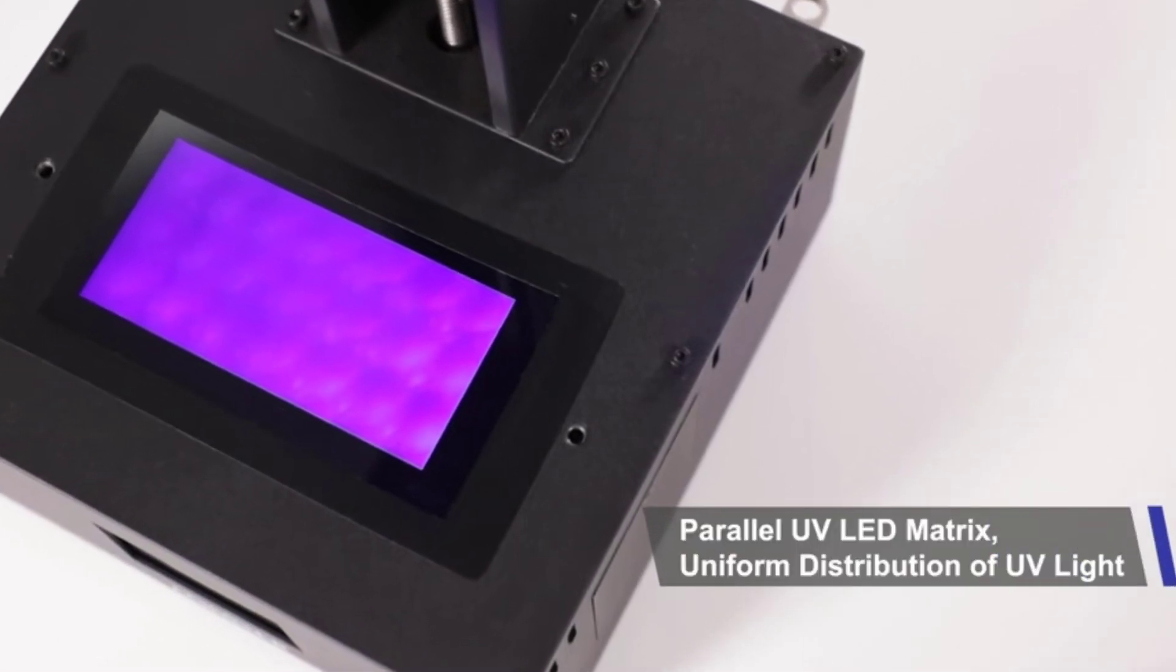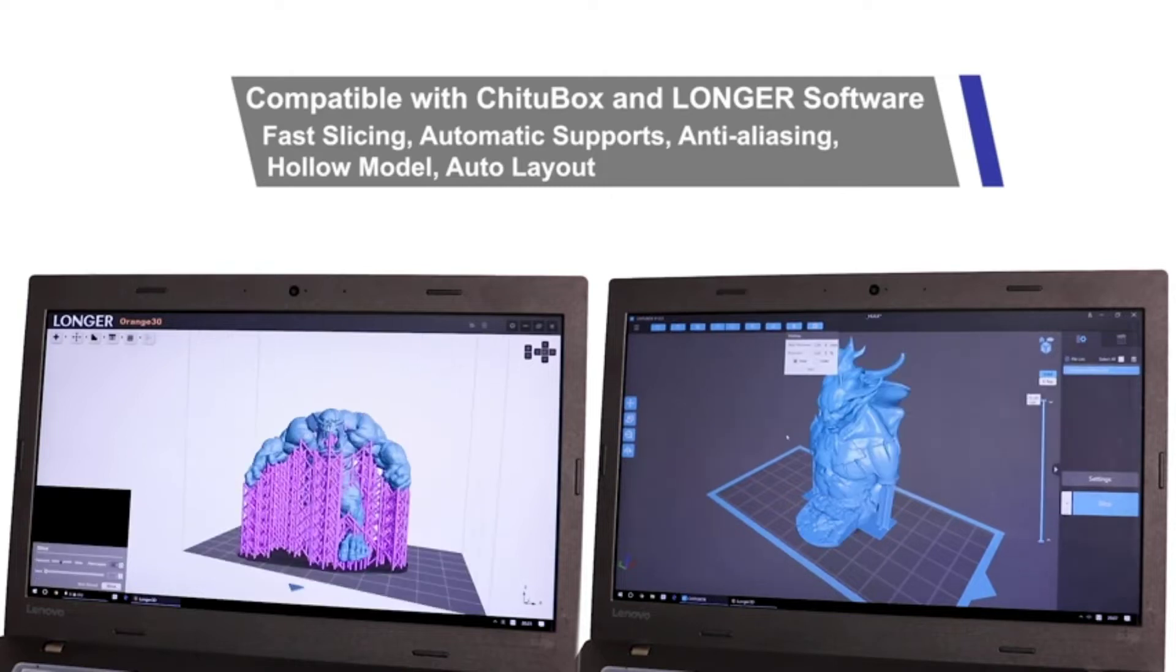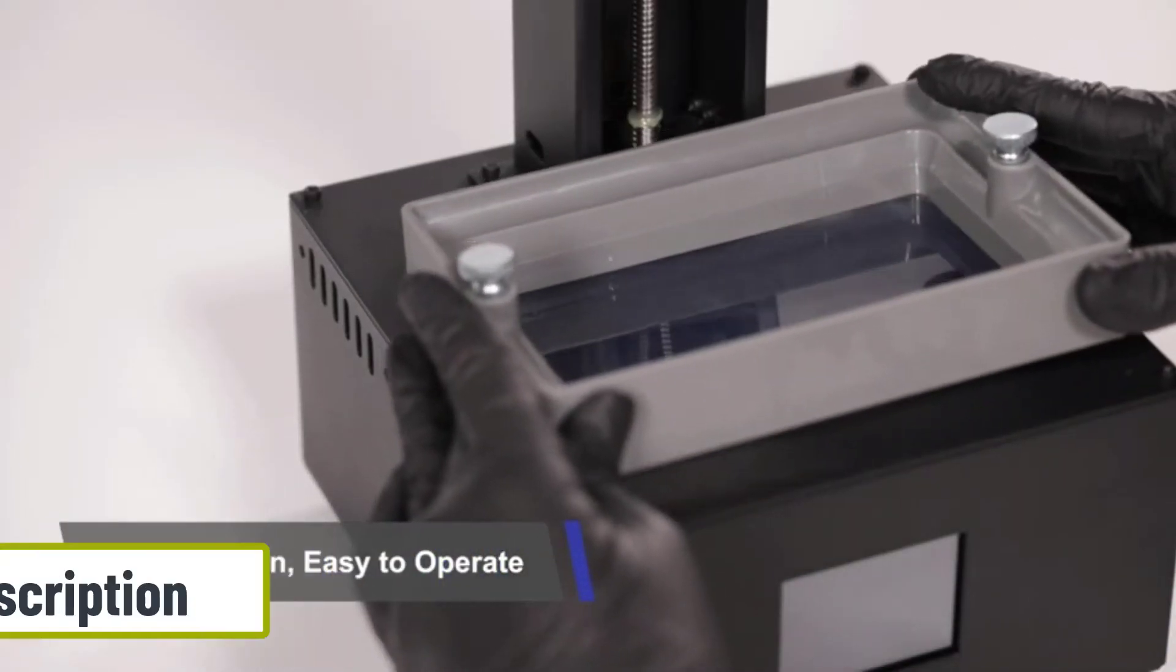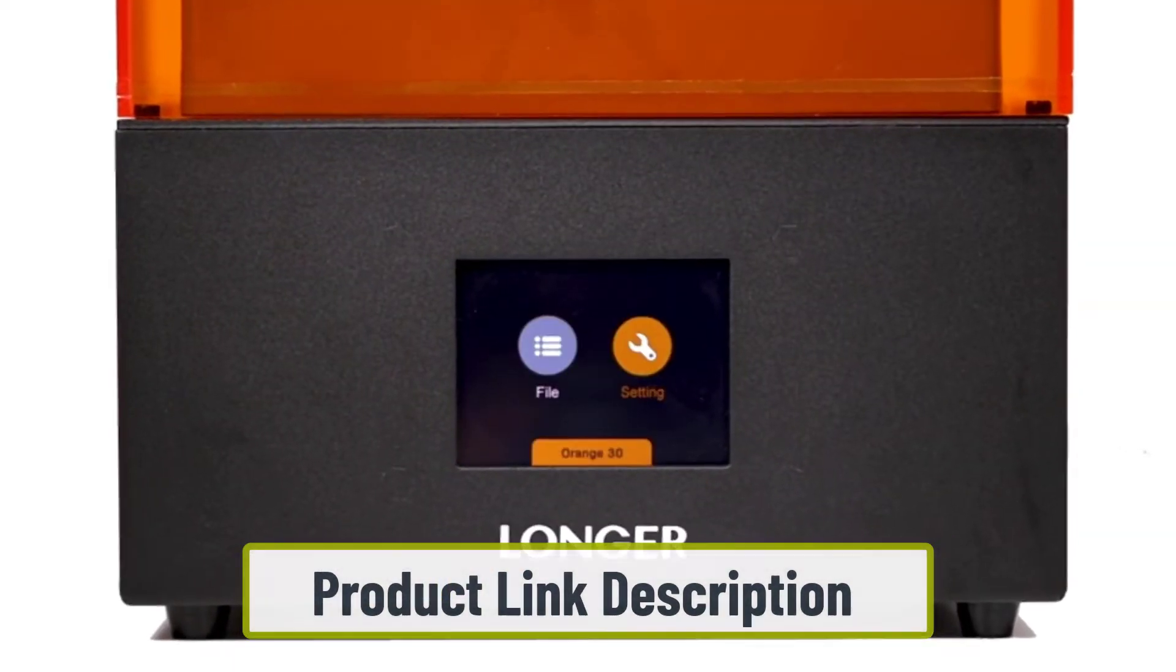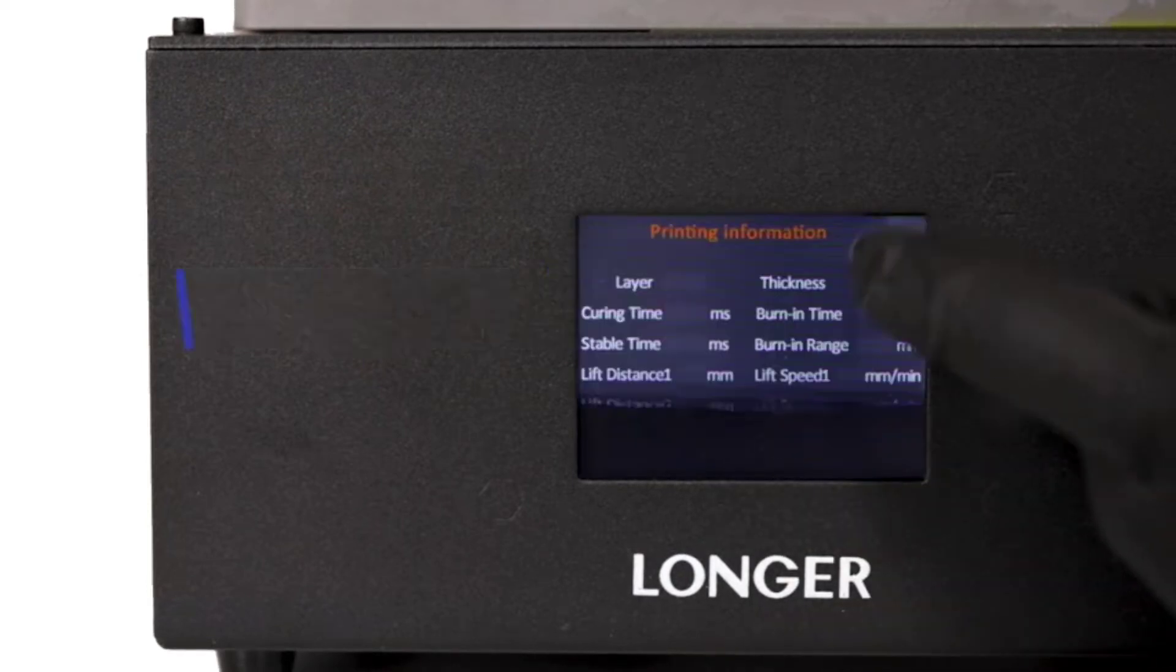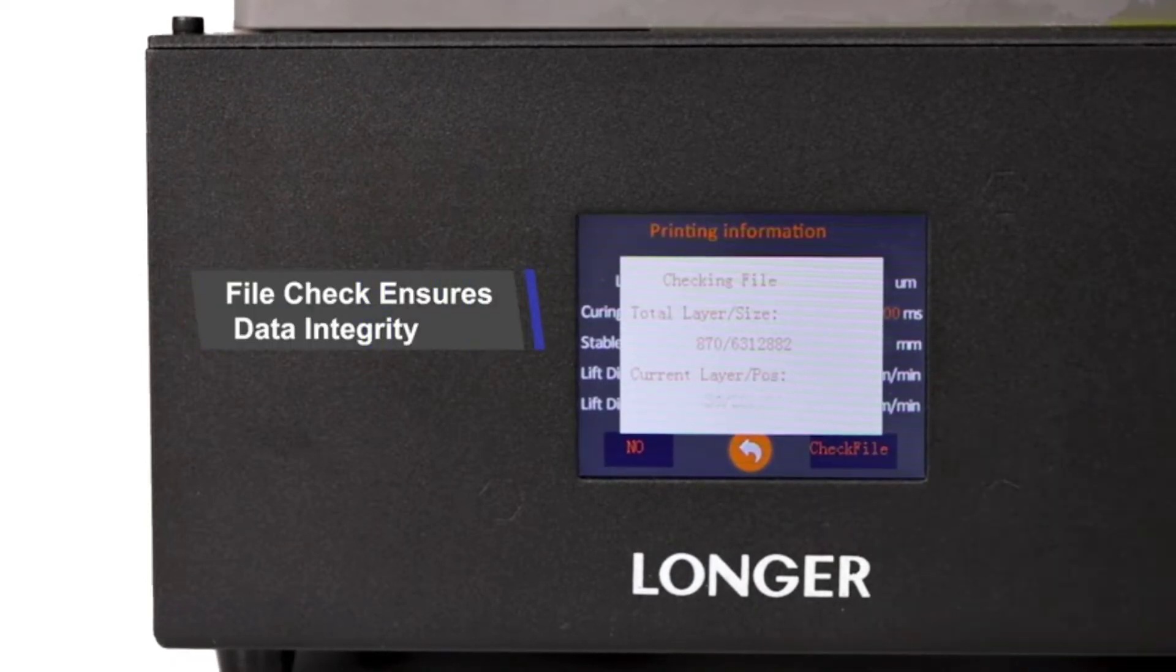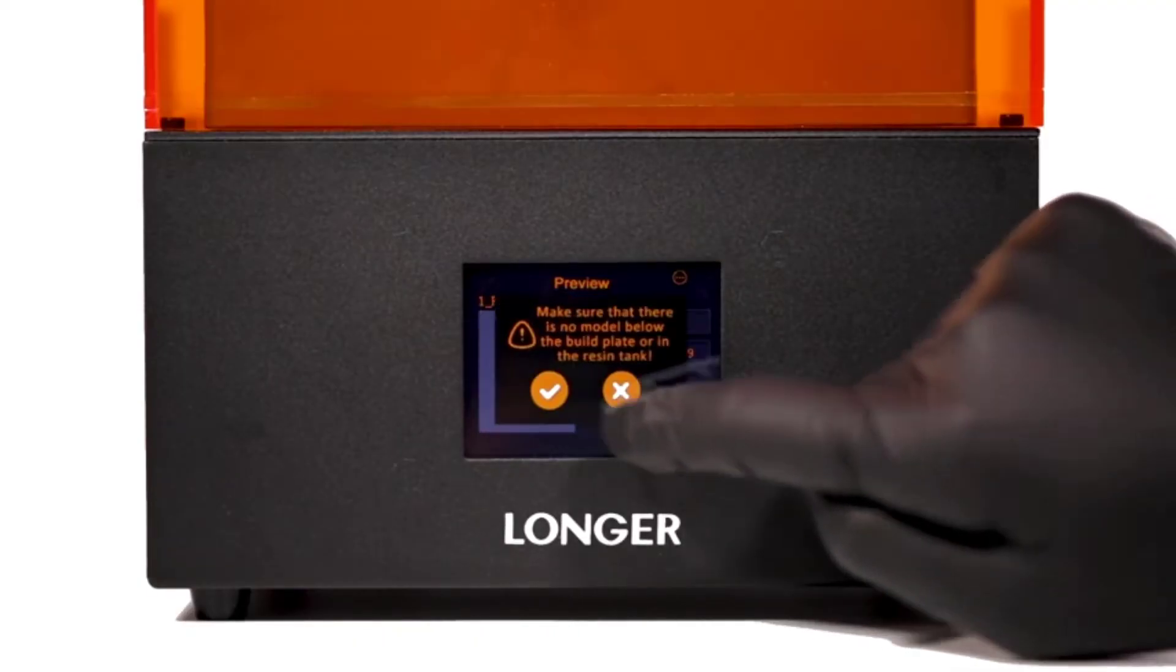On board, you'll find a 2K LCD screen at 2560x1440. The 4.72x2.68x6.69-inch build volume is decent, and its matrix UV LED array fosters reliable, smooth prints. A 47.25 micron resolution makes for fabulous details.